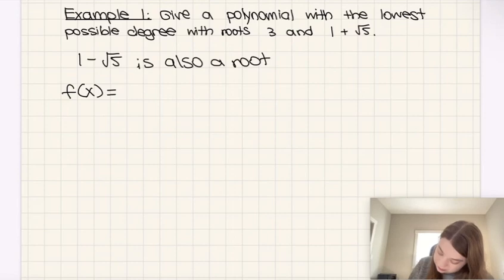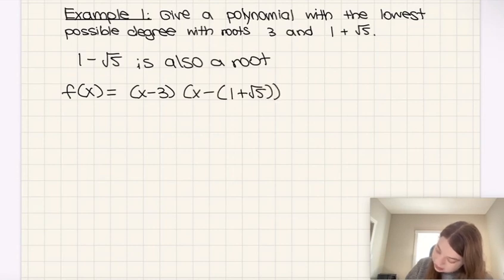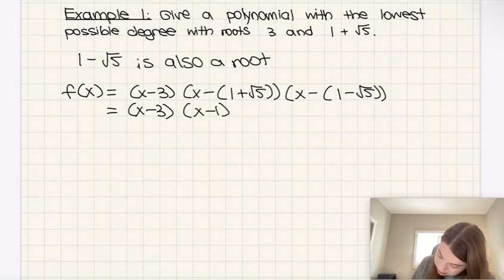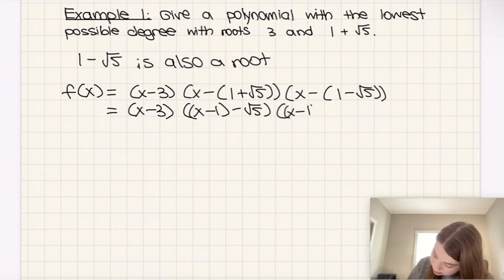f of x is equal to x minus 3, because if we want 3 to be a root, x minus 3 has to be part of this. And then we're going to have x minus our first root, which is 1 plus root 5, and then x minus 1 minus root 5 for our other one. And then I'm going to rearrange this a little bit to give us x minus 1 minus root 5 and also x minus 1 plus root 5.